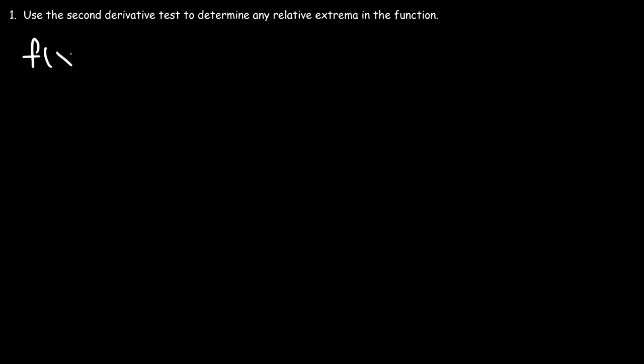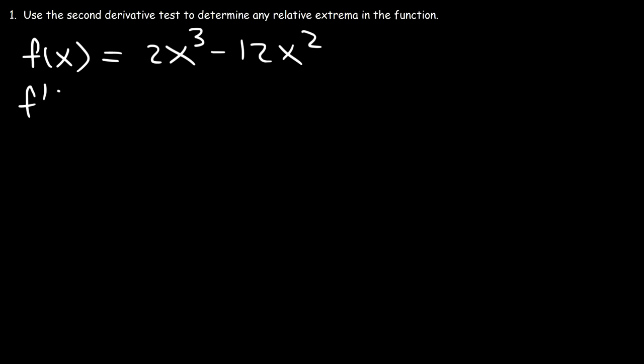Now let's work on an example problem. Let's say that f(x) = 2x³ - 12x². Go ahead and use the second derivative test to determine any relative extremum in this function.